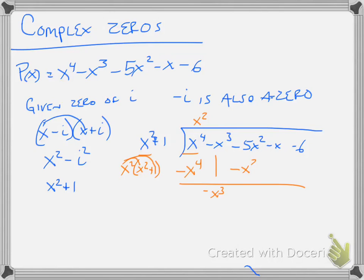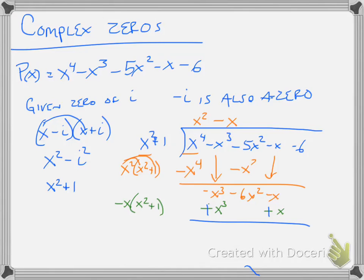The negative x cubed comes down. This becomes negative 6x squared, and I bring down the negative x. What multiplies to give negative x cubed — that's going to be negative x. I multiply that back through x squared plus 1, and I get negative x cubed minus x. Then I change my signs because I'm subtracting. I combine those — those cancel out. Negative 6x squared comes down, those cancel out, and I have negative 6.